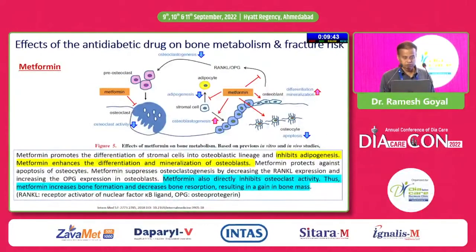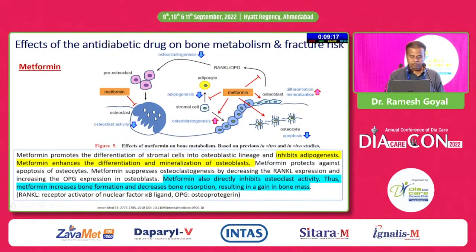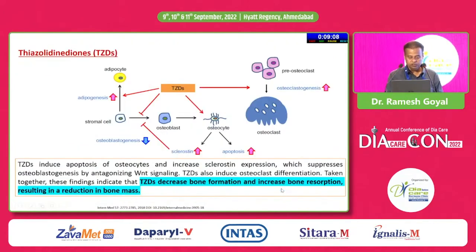Regarding metformin specifically — it promotes differentiation of stromal cells into the osteoblastic lineage, inhibits apoptosis, and enhances differentiation and mineralization of osteoblasts. So metformin increases bone formation and decreases bone resorption, resulting in a gain in bone mass, and definitely does not increase fracture risk. Glitazones, on the other hand, decrease bone formation and increase bone resorption — a double insult on the bone resulting in reduction in bone mass.